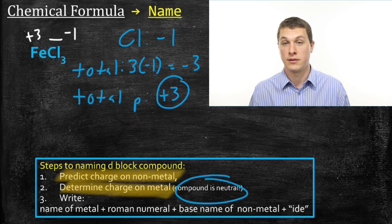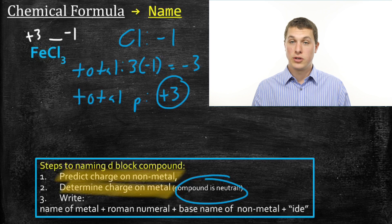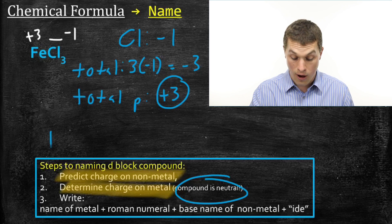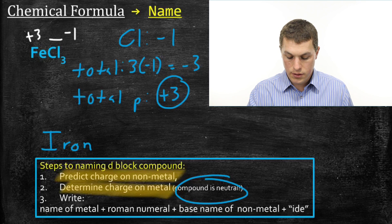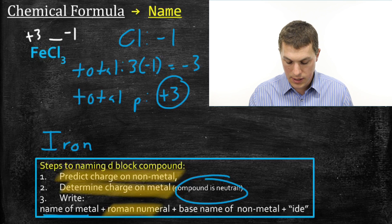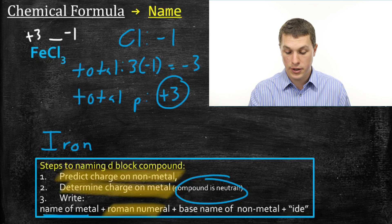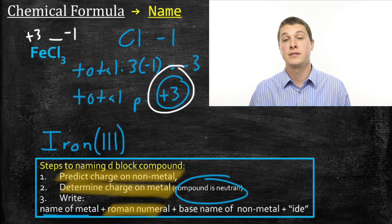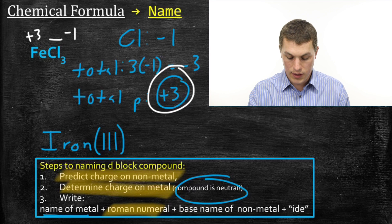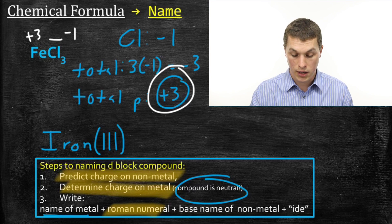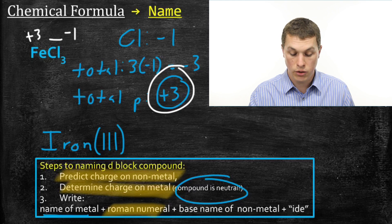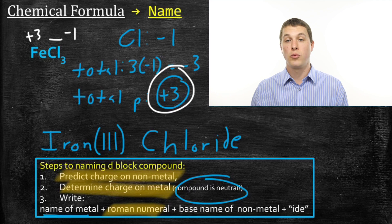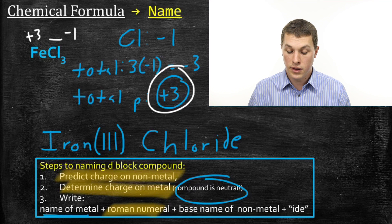It takes a little practice to get down that process of figuring out the charge, so we're going to do a few more practice problems. Now that we know the charge of both species, our naming rules are very similar. We write the name of the metal from the periodic table, which in this case is iron. We add Roman numerals in parentheses to indicate the charge on iron — so we write iron(III). Then we write the base name of our non-metal, chlorine, which gives us chlor-, and then we add -ide. So this process is a little more complicated because we have to figure out the charge on our metal.